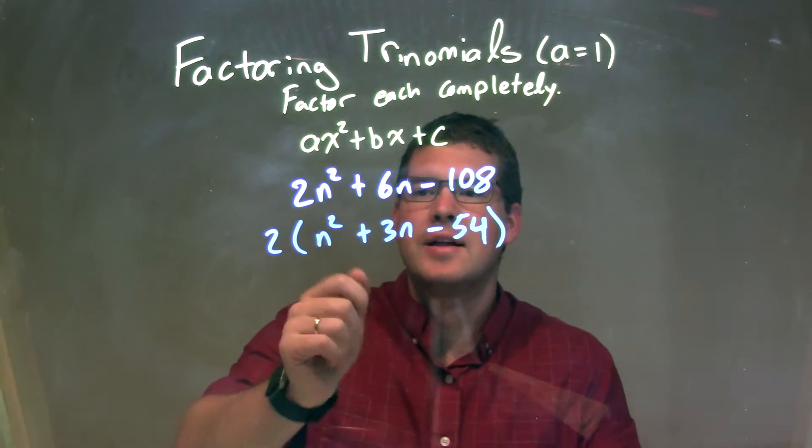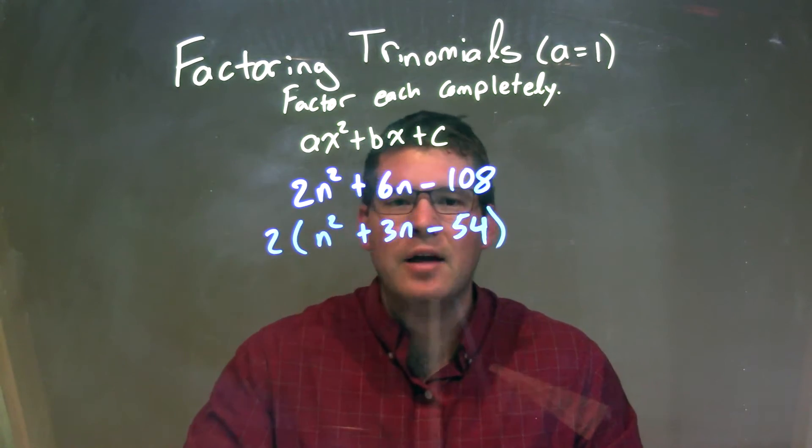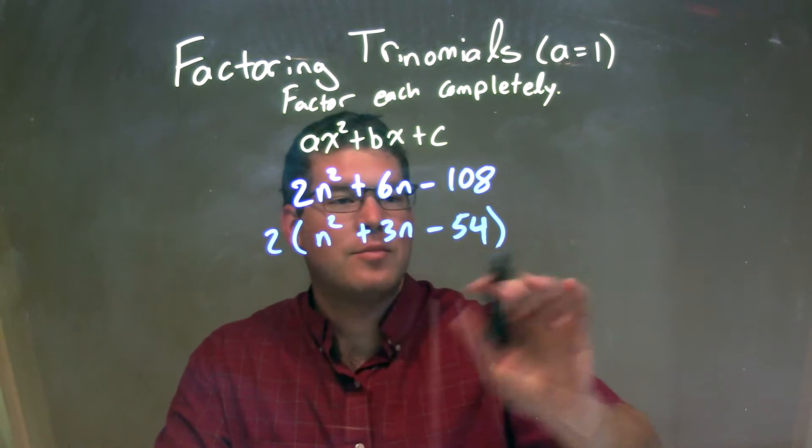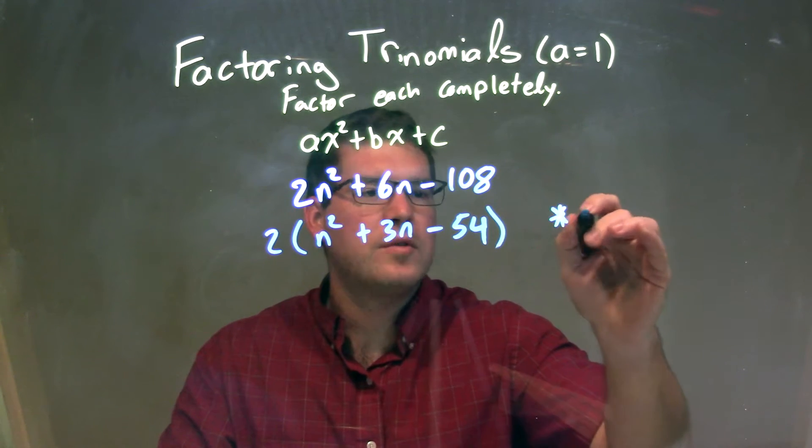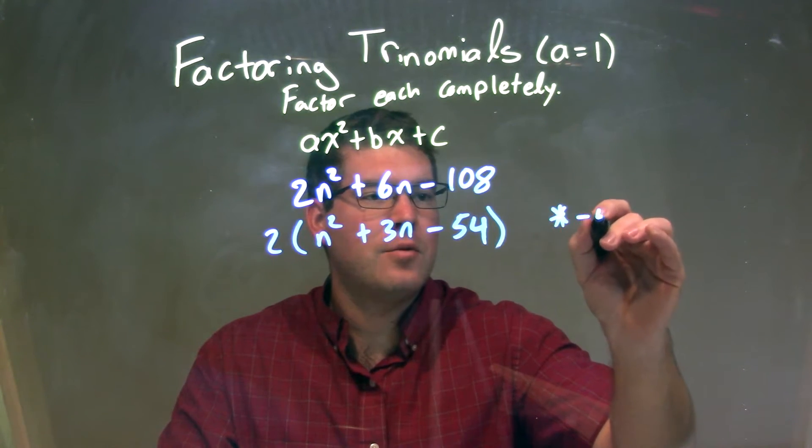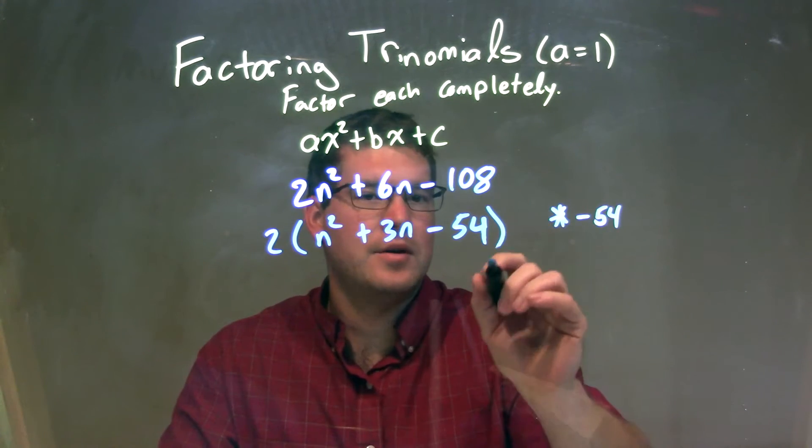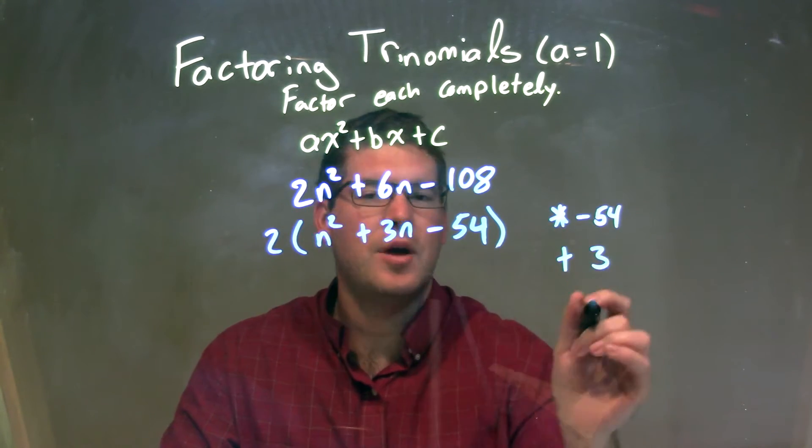So now what I can do is I can imagine a 2 just on the outside, and I can now ask the question, what two numbers multiply to be a negative 54 at c value here, and add to be our b value, which is 3. What two numbers?